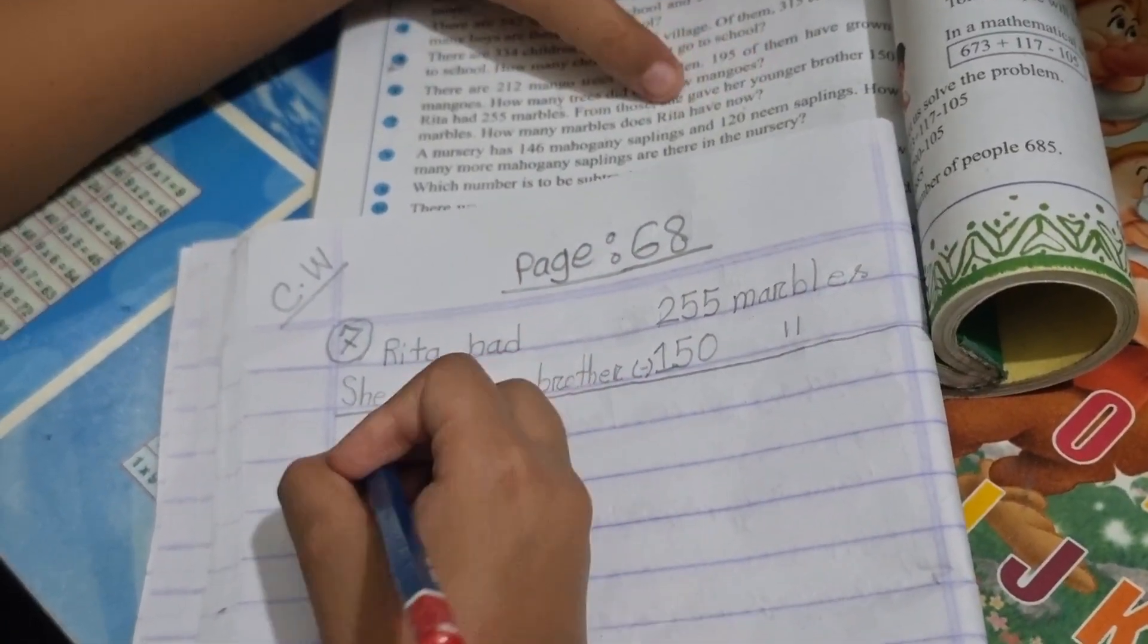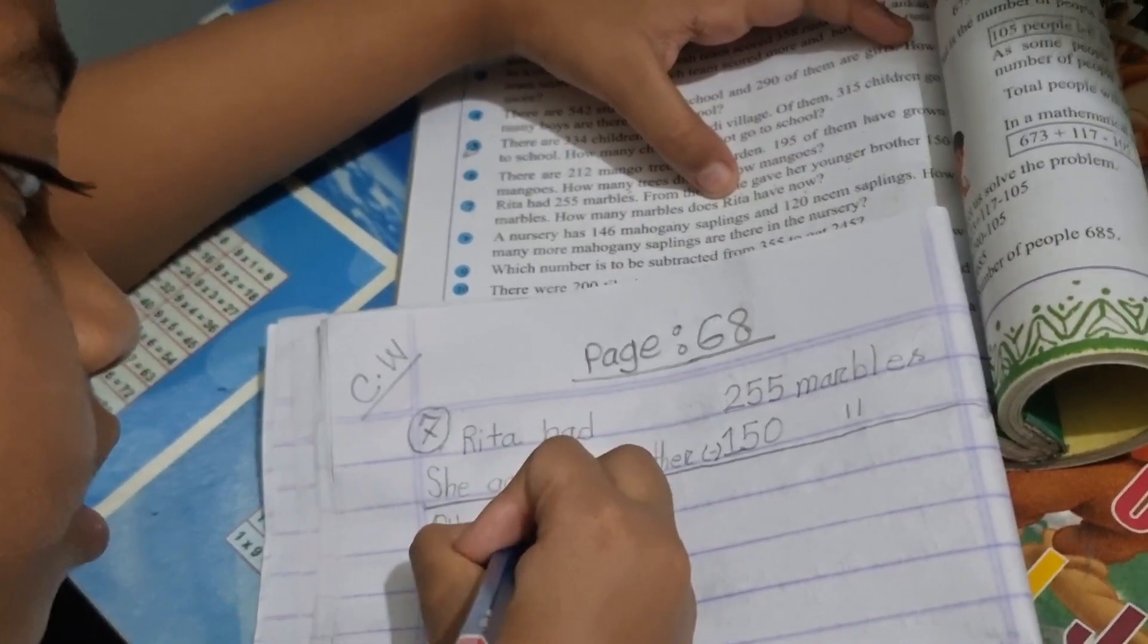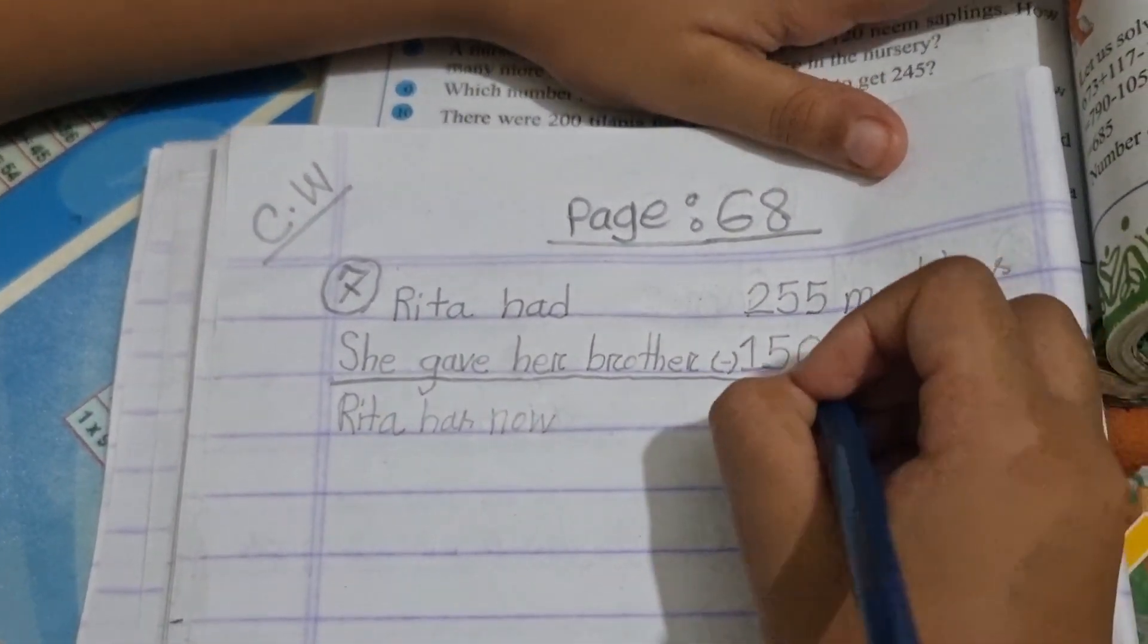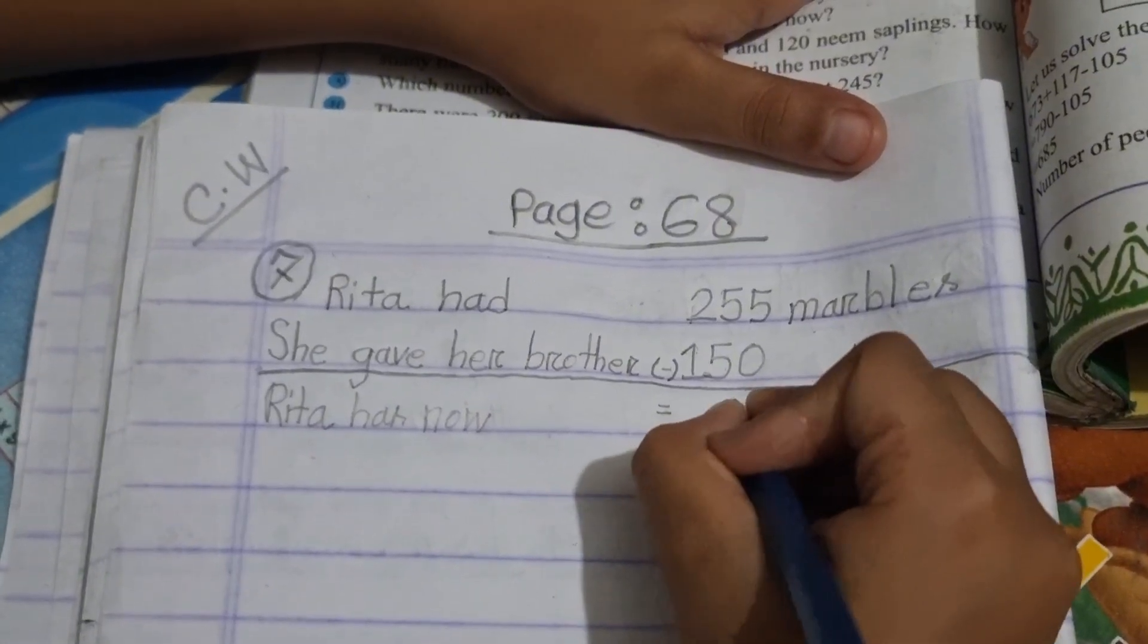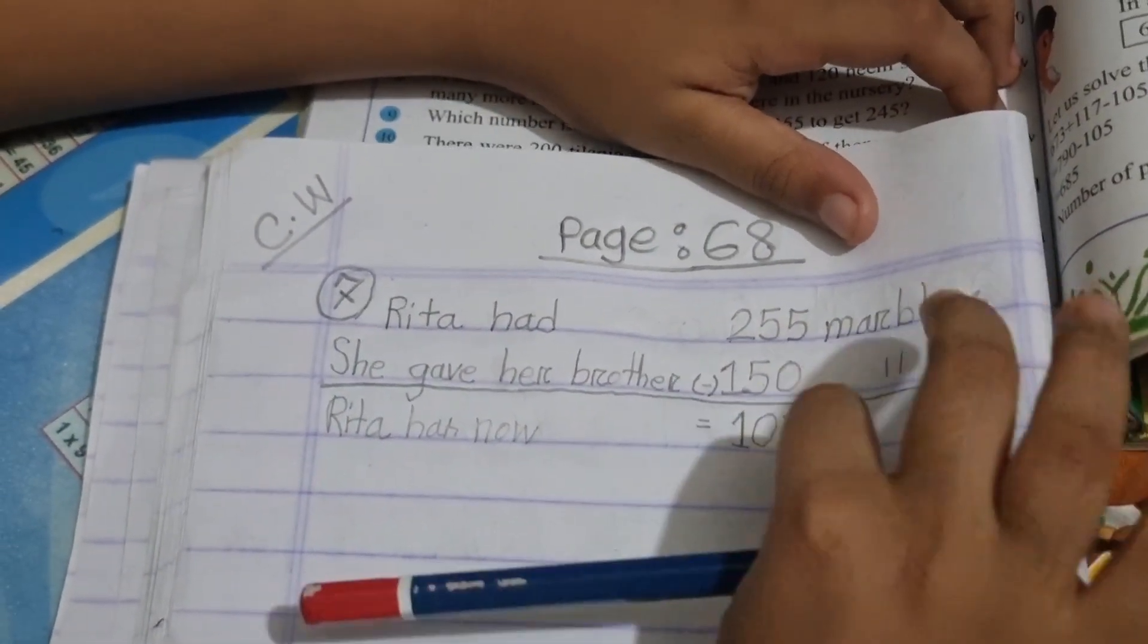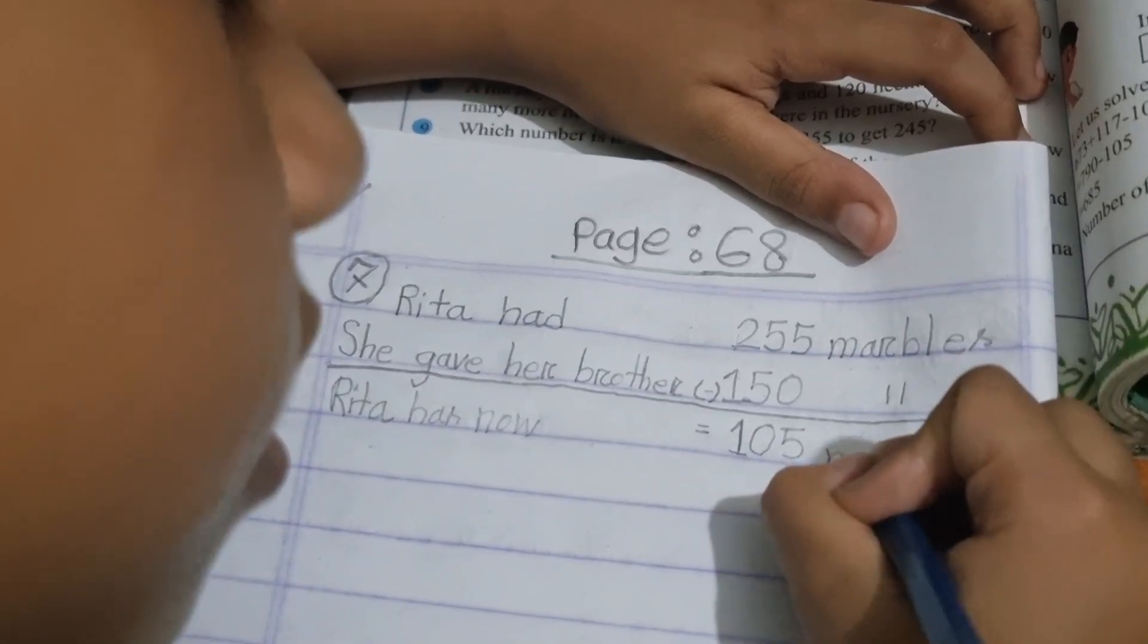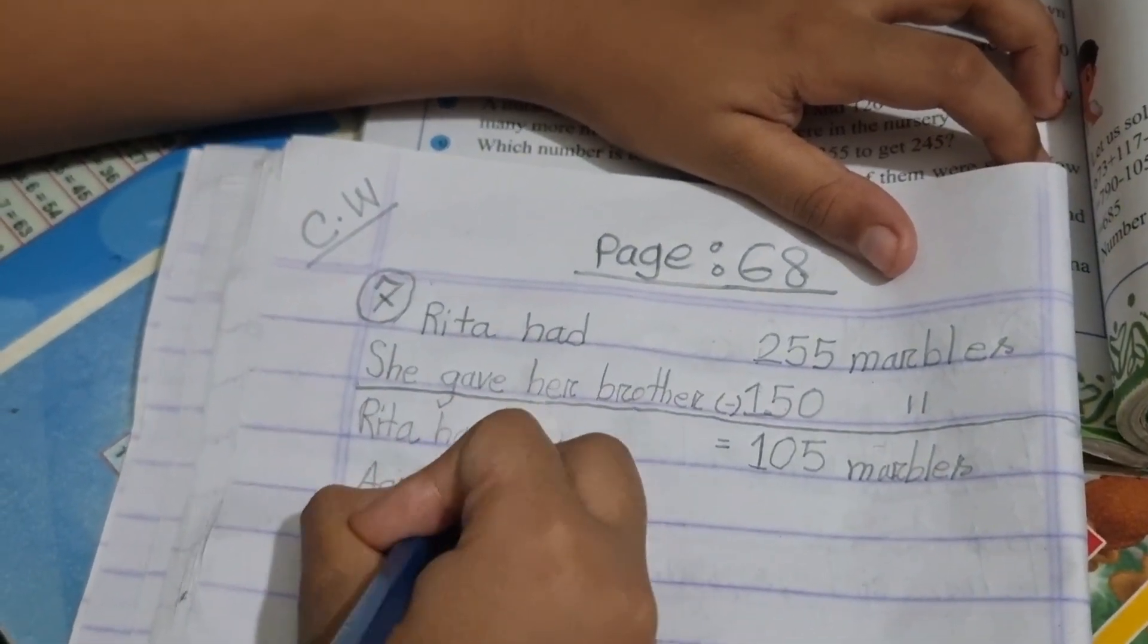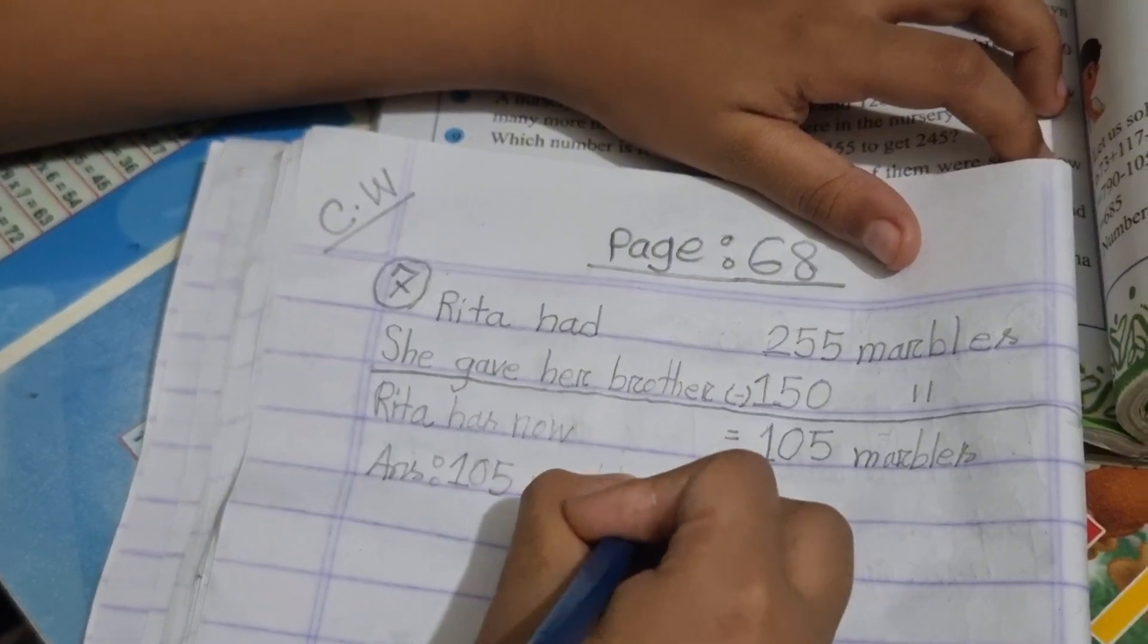Rita has now, let's calculate: 5 minus 0 is 5, 5 minus 5 is 0, and 2 minus 1 is 1. So 105 marbles. Rita has now 105 marbles.